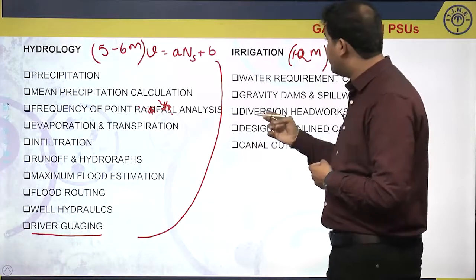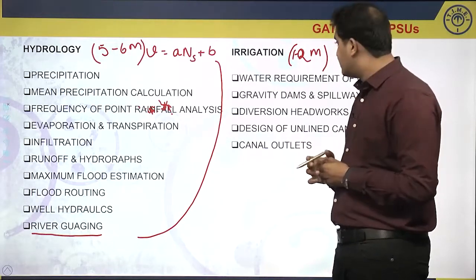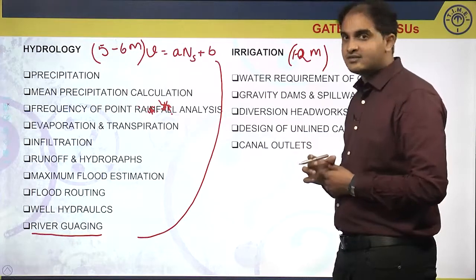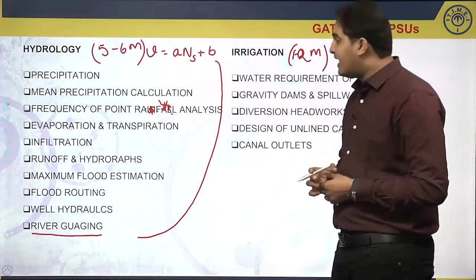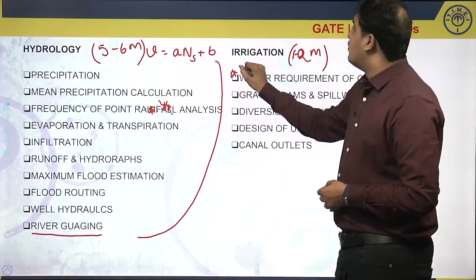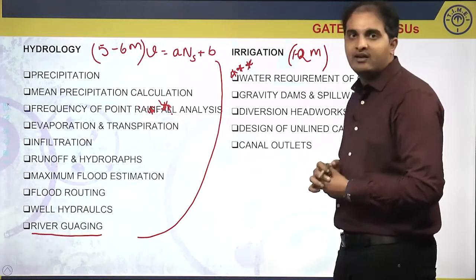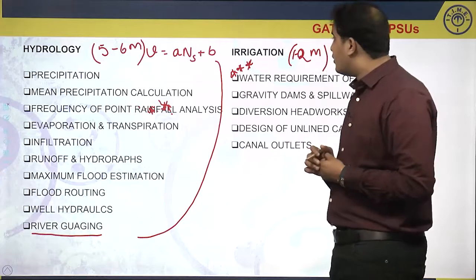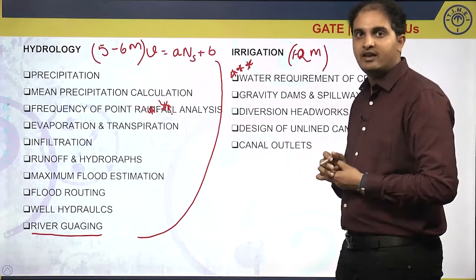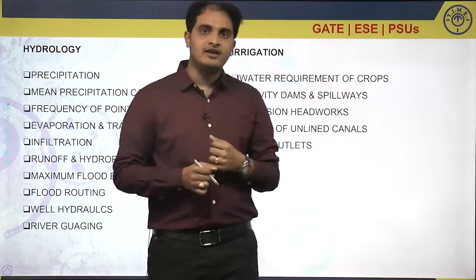We have various topics in irrigation like water requirement of crops, gravity dams and spillways, diversion headworks, design of unlined canals, and canal outlets. Out of which, water requirement of crops is the most important topic. You can expect a question almost every year from irrigation engineering. Let us start with irrigation engineering.